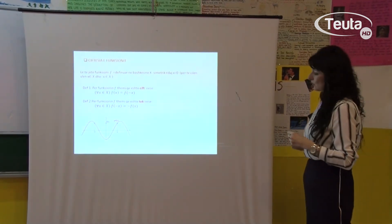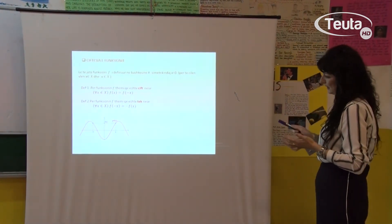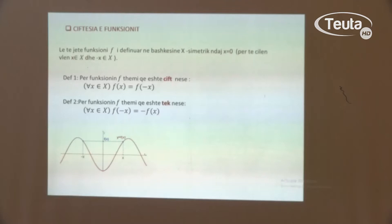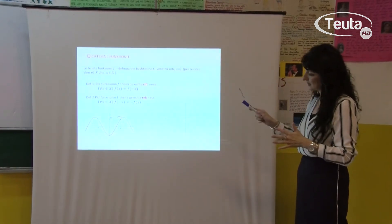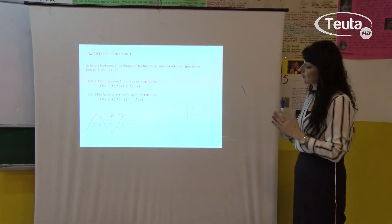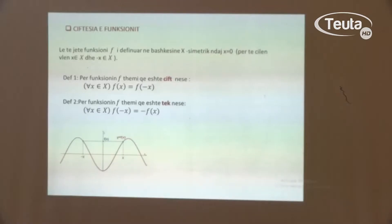Tani do të shohim grafikisht. Këtu kemi të paraqitur një funksion dhe shikoni, keni dy vlerat e argumentit, x-it dhe -x-it. Nëse pasqyrojmë në funksion ndaj boshtit y dhe shohim ku e ka pasqyrimin pika x, kurse në anën tjetër shikon pika -x, do të shohim se të dy këto kanë të njëjtën vlerë. Pra ky funksion është funksion qift, dhe daloni f(x) = f(-x).